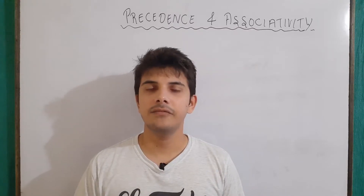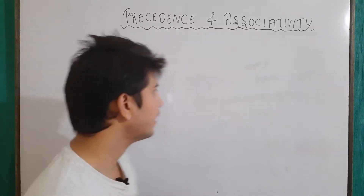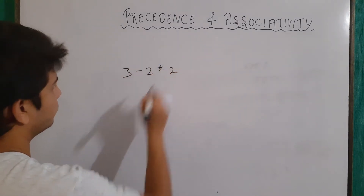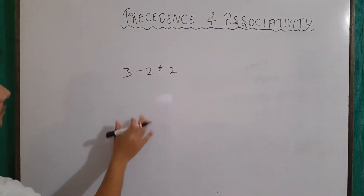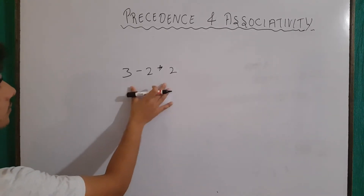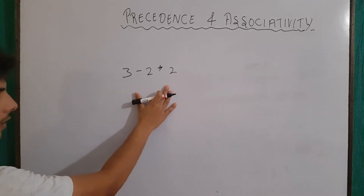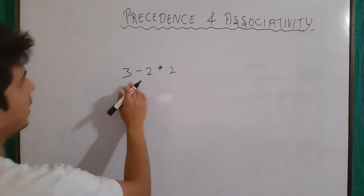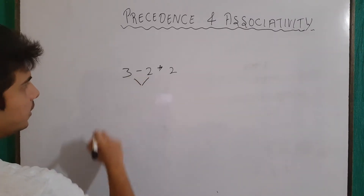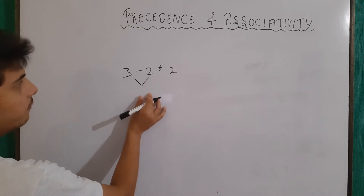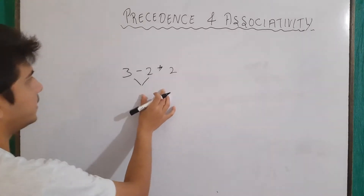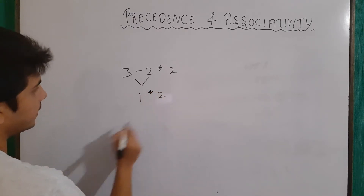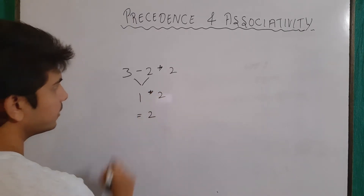Let's try to understand precedence first with an example. Let's say I want to evaluate the expression 3-2*2. Now, what will be its final output? This expression can be evaluated in two ways. First, we perform the minus operation, so we get 1, and then remaining is asterisk 2, so our final output is 2.